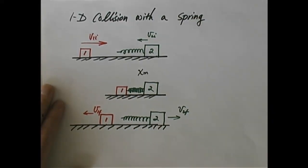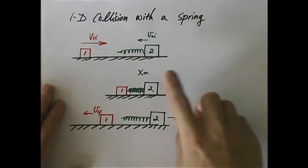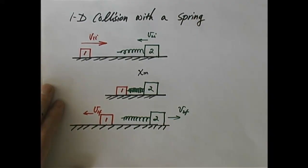How do I find that? We realize that the presence of the spring does not change the linear momentum of the two objects — I can always use conservation of linear momentum. That's clear, but it only gives me one equation. I have more than one unknown: one is the amount of compression, and secondly, I need to know at that moment how fast these two objects are moving. Conservation of momentum gives only one equation.